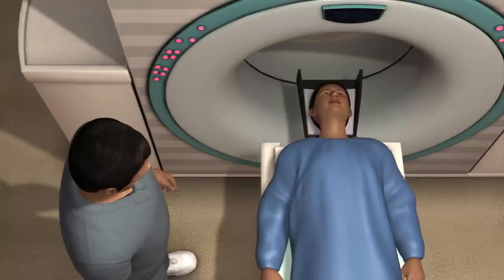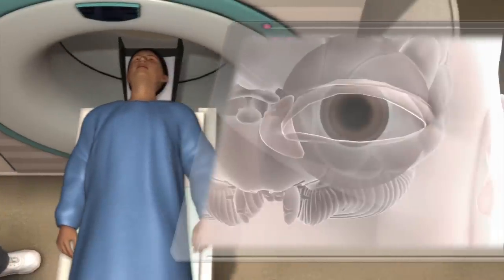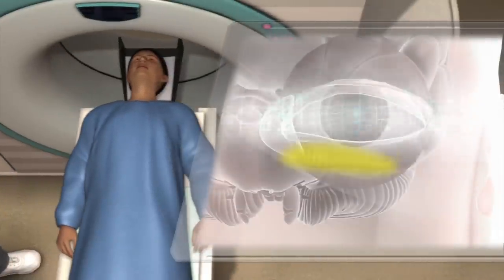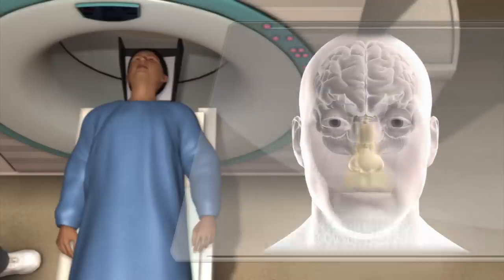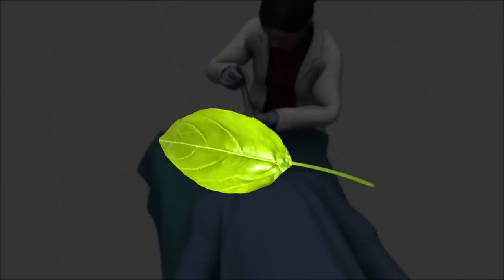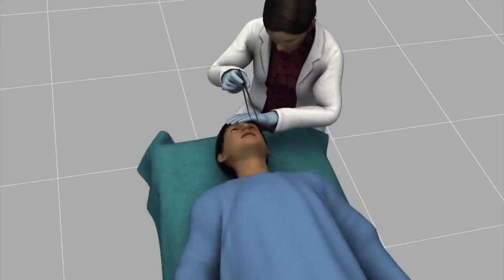An MRI scan revealed the three centimeter long larva taking residence inside his eye. The location of the worm was close to the part known as the danger triangle of the face, meaning the infection could easily spread to the brain.